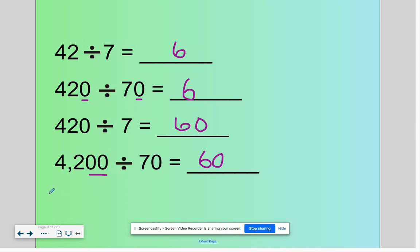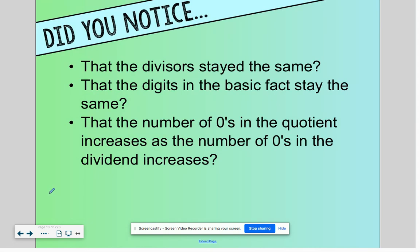Again, feel free to pause this video whenever you need. Did you notice that the divisors stayed the same? That the digits in the basic fact stayed the same? And that the number of zeros in the quotient increases as the number of zeros in the dividend increases?